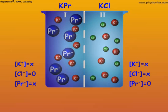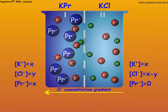Since side 1 does not contain chloride ions, chloride ions diffuse along a concentration gradient from side 2 to side 1.